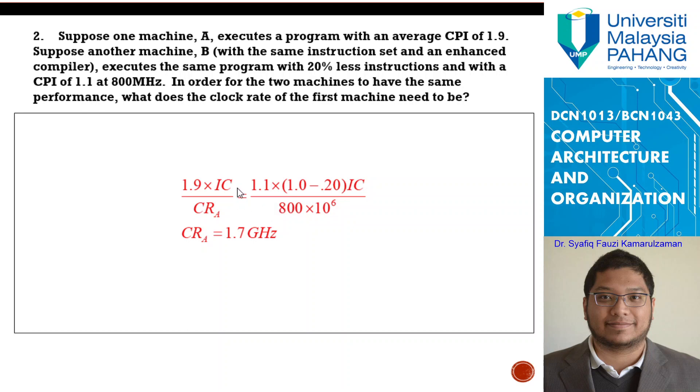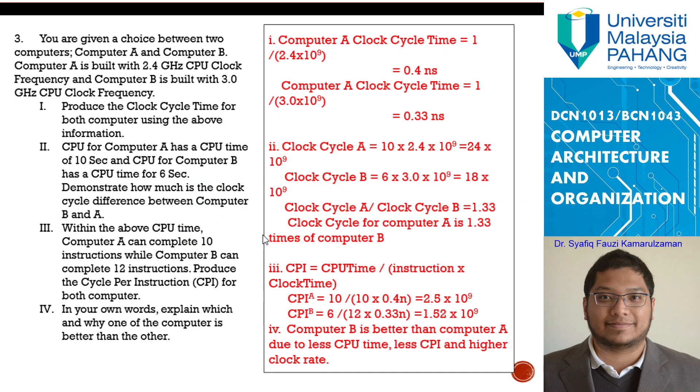At the end, when you conduct a little bit of algebra, transferring here, cancelling IC, and you try to get the CRA is equal to 1.7 GHz. Here you see that machine A clock rate A will be 1.7 GHz.